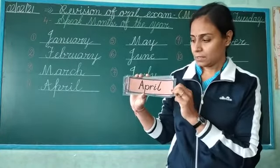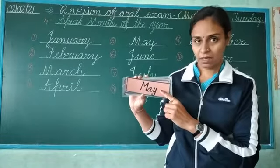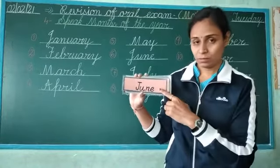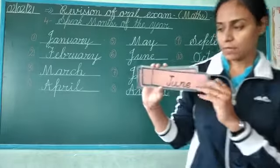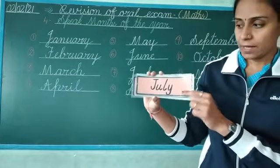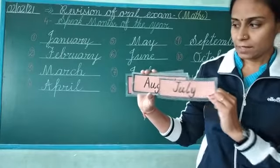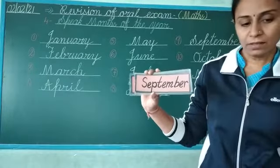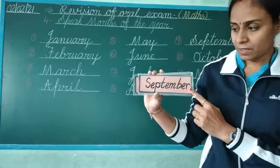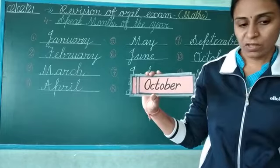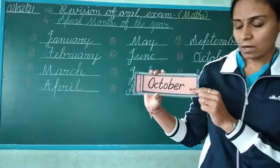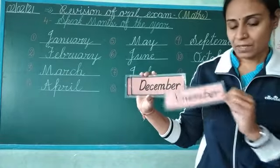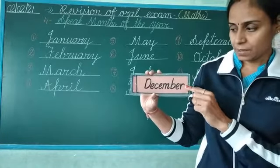April. Then which month comes? May. Then after which month comes? June. Then which month comes? July. Then which month comes? August. Then which month comes? September. Then which month comes? October. Then which month comes? November. Then which month comes? December.